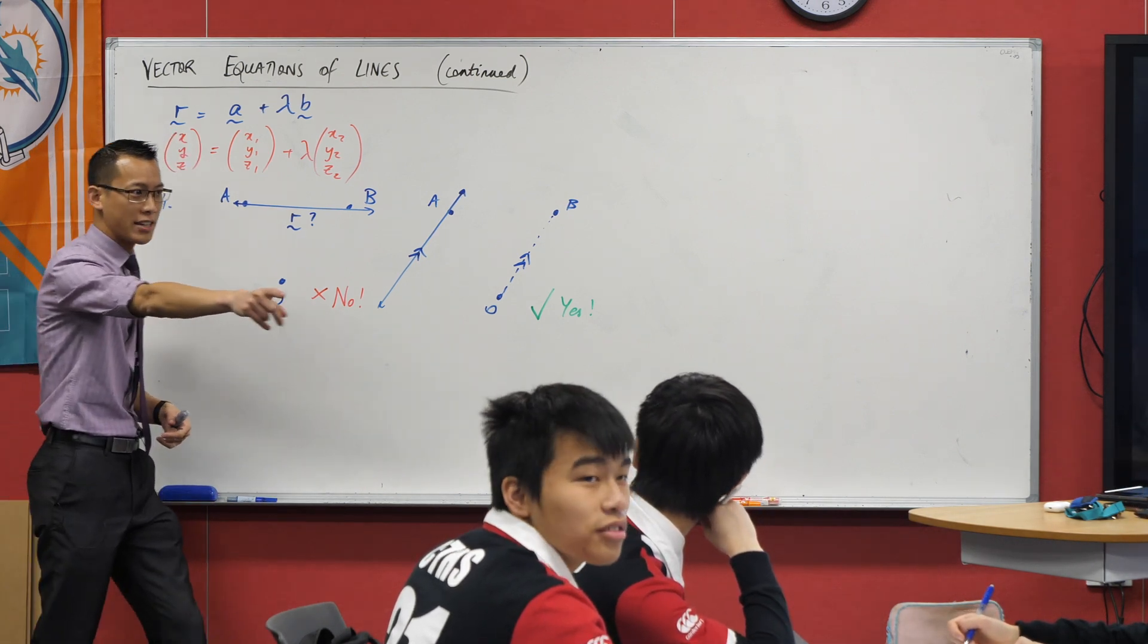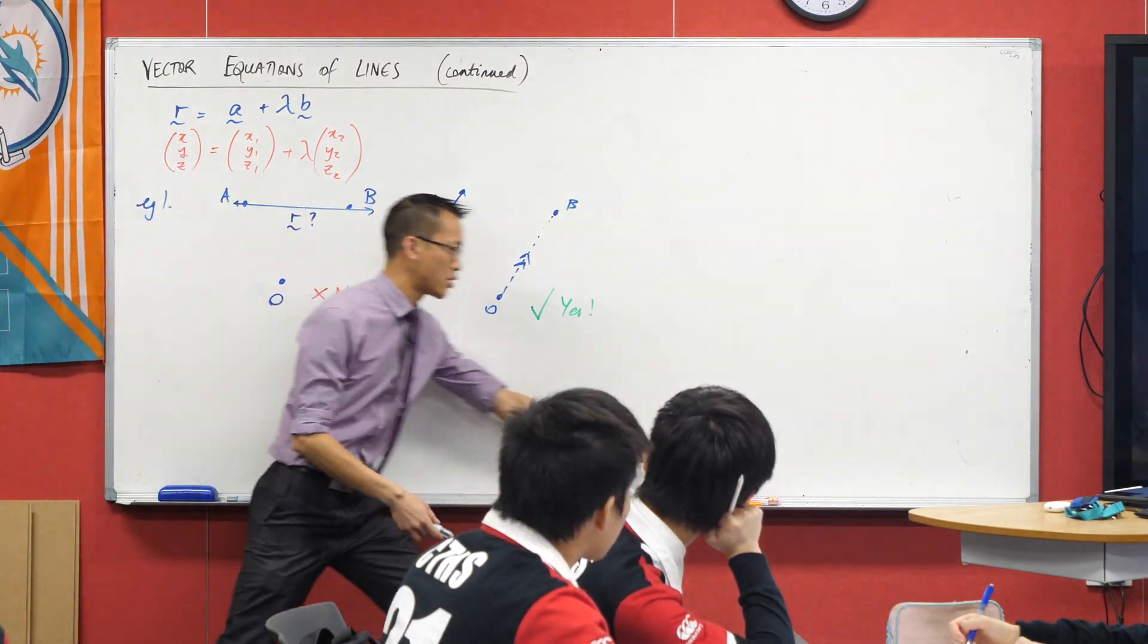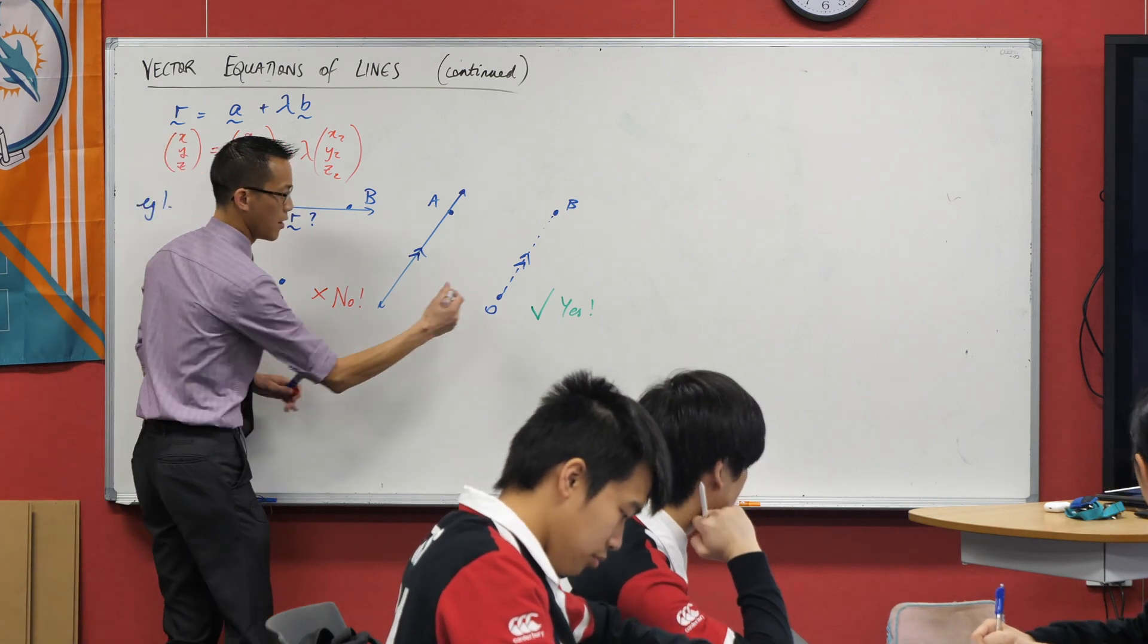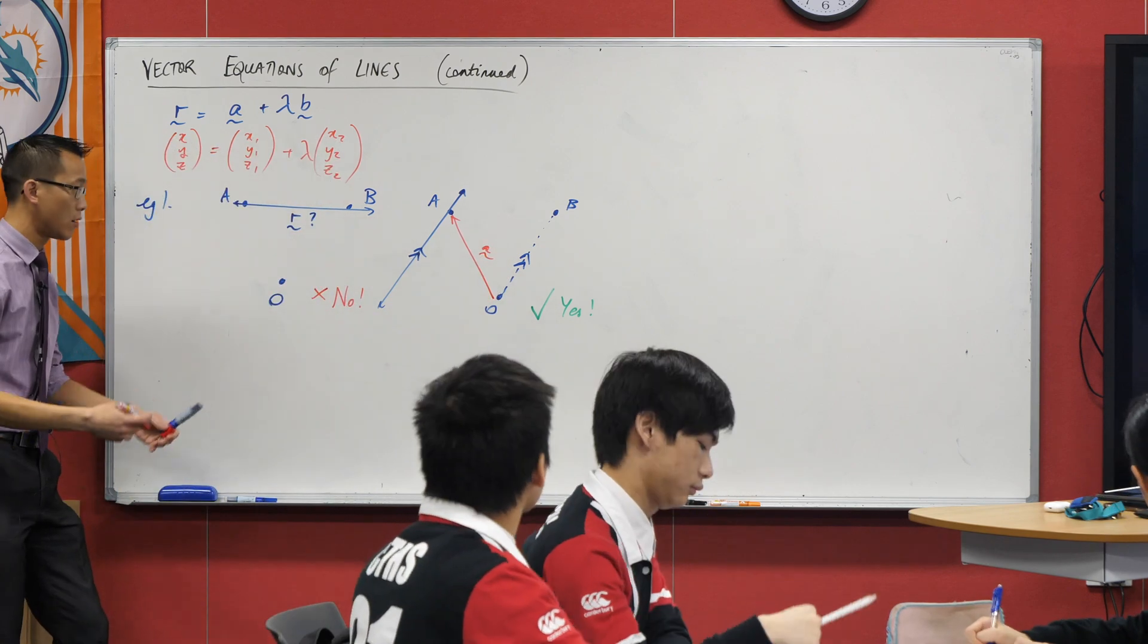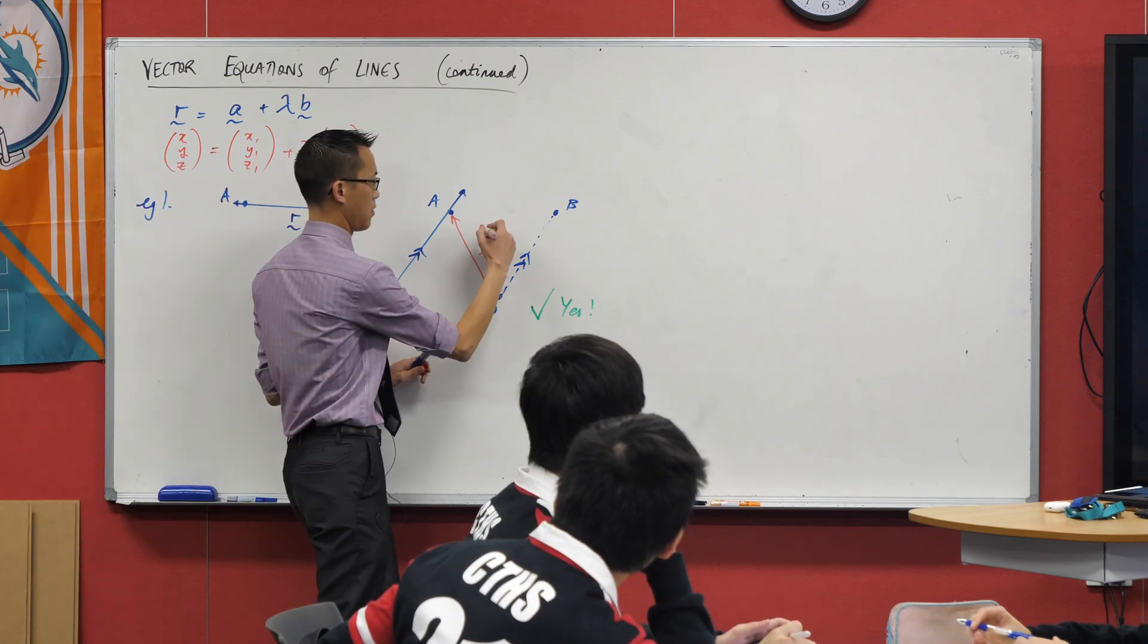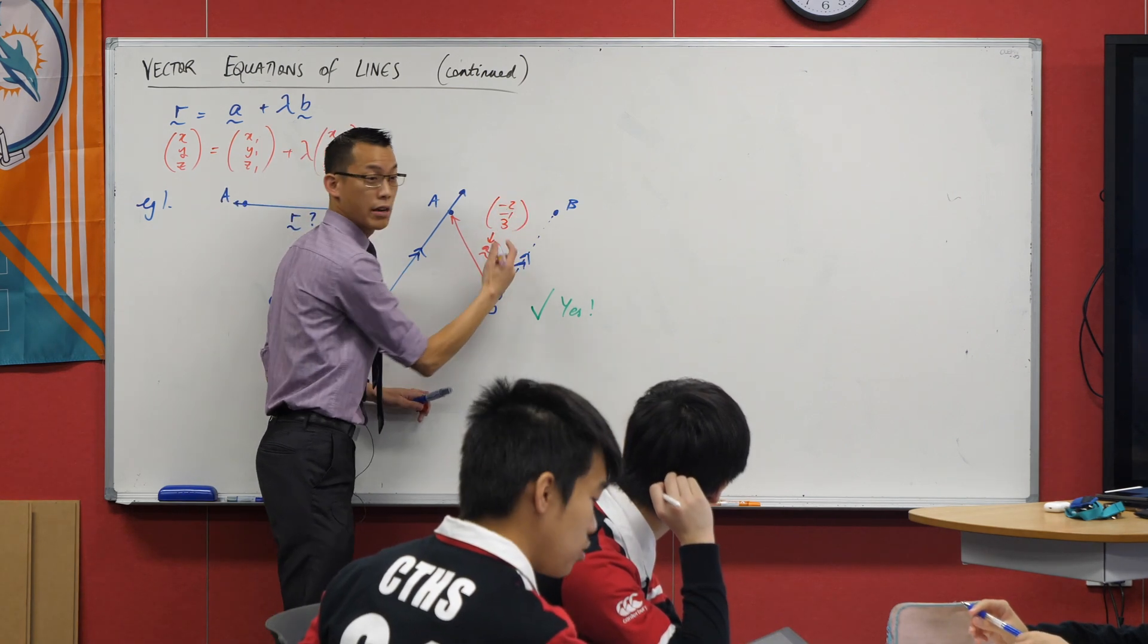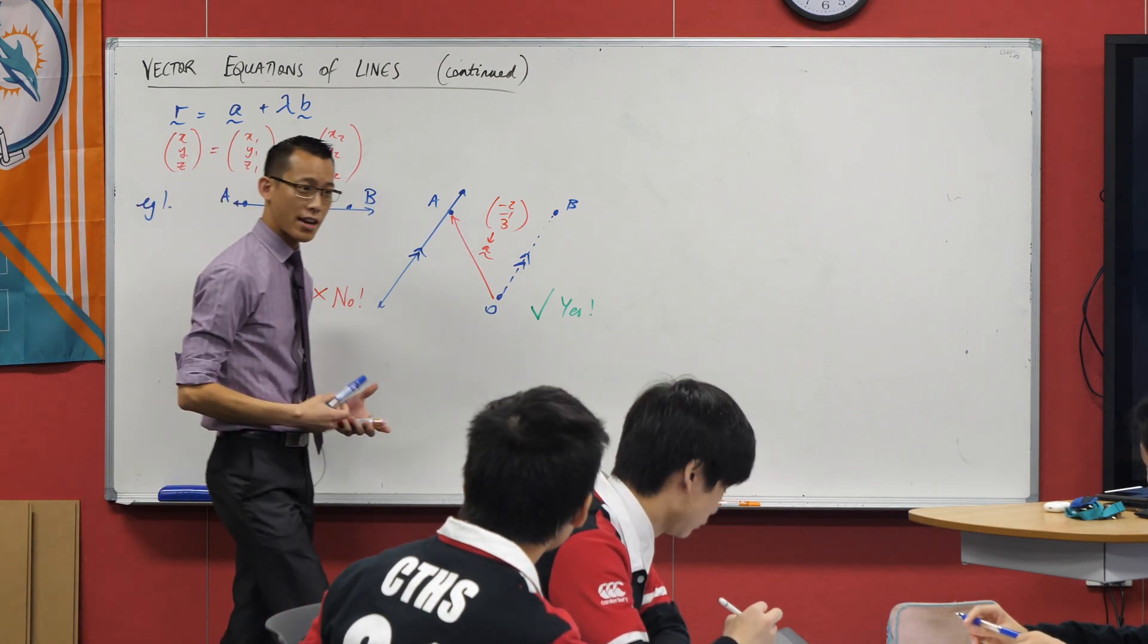We need a position vector, we need to get onto this line, and then we need a direction vector to say from that point, which way are you facing. It requires zero calculation or arithmetic. You can just read it off. Anyone want to give me a suggestion for a position vector? Okay, fantastic. So I want to get onto this line. I can pick any of these points, but the only point I'm actually already handed is A.